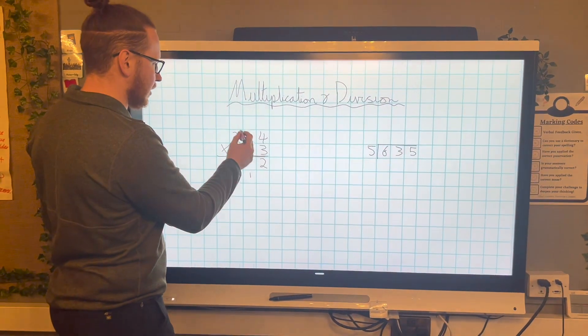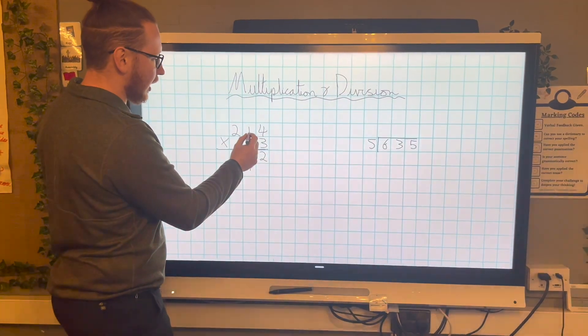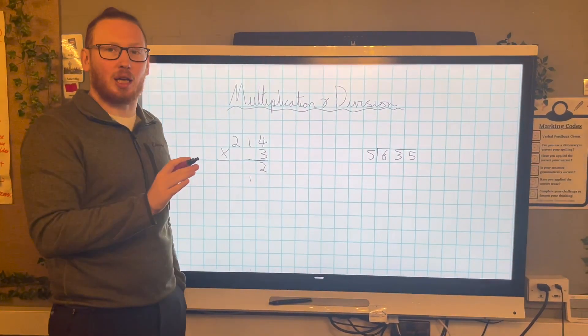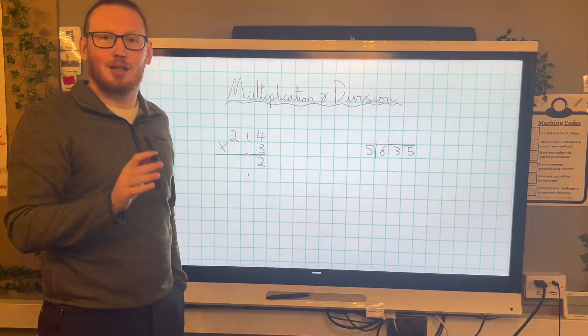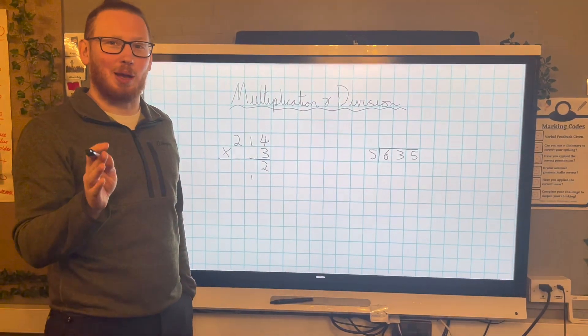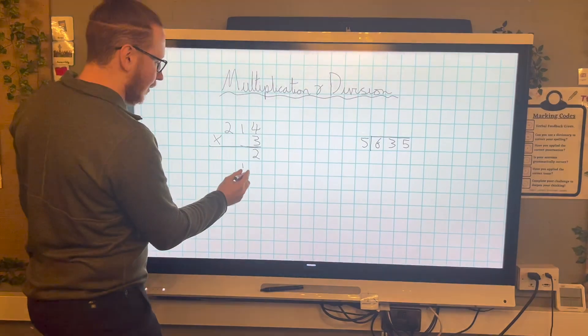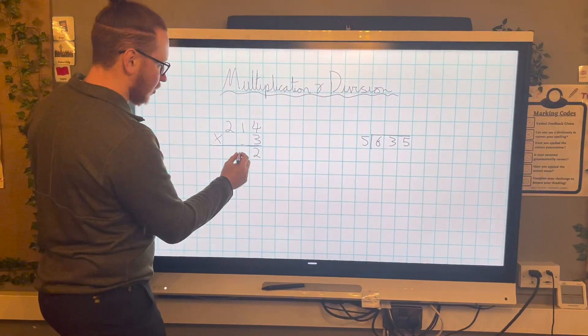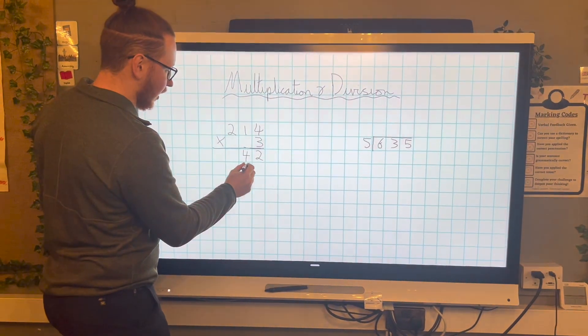After that, I'm going to have a look in my tens column. So the digit in my tens column is a one. So I know I can just do one times three. Again, we did a lesson on this. Multiplying by one, it stays the same. So three. And I'll make sure I add on this extra one to turn that into a four.